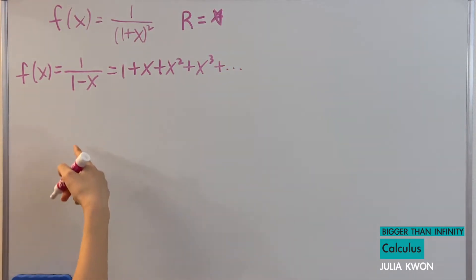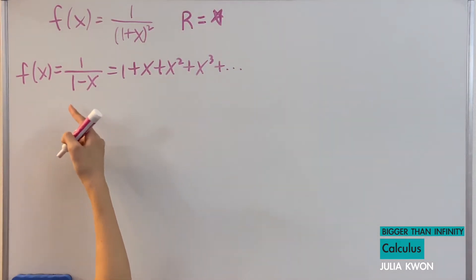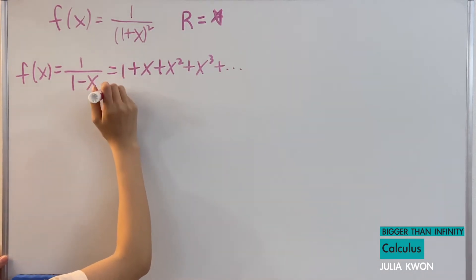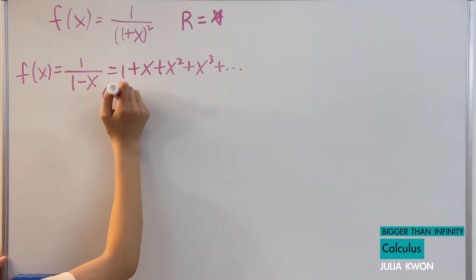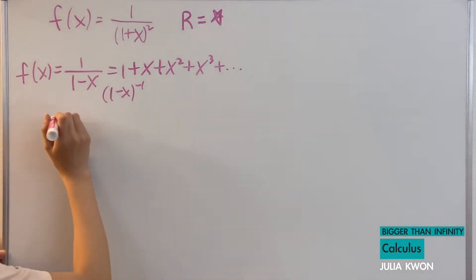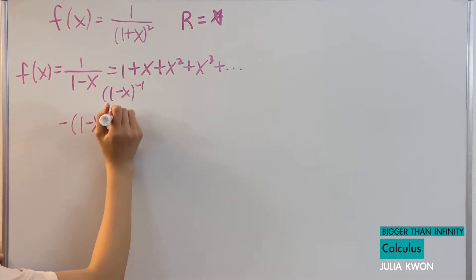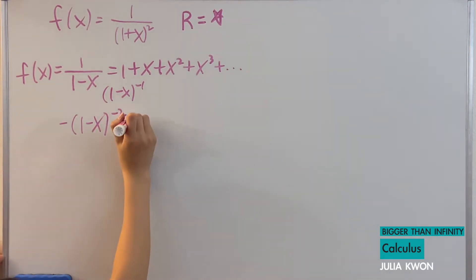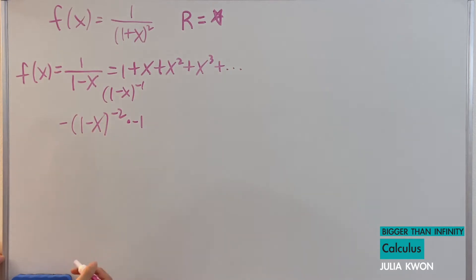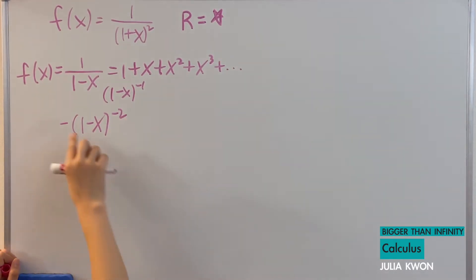And we're going to take the derivative on both sides. So the derivative of 1 divided by 1 minus x, which is also equal to 1 minus x to the power of negative 1. If we take this derivative, then we would have negative 1 minus x to the power of negative 2. But using the chain rule, we have to multiply negative 1 again, so the negatives cancel out.